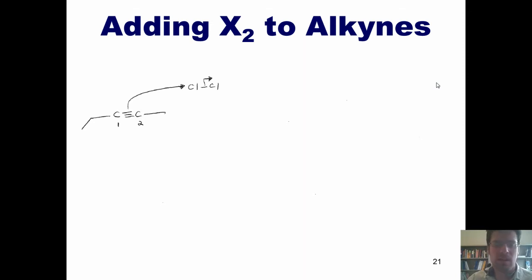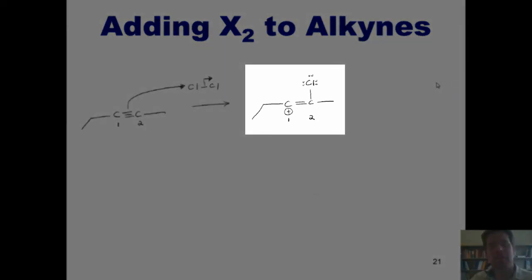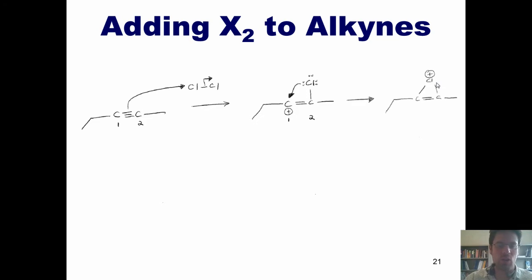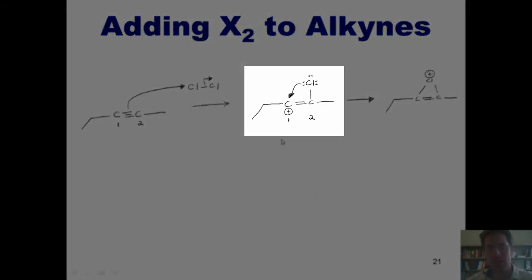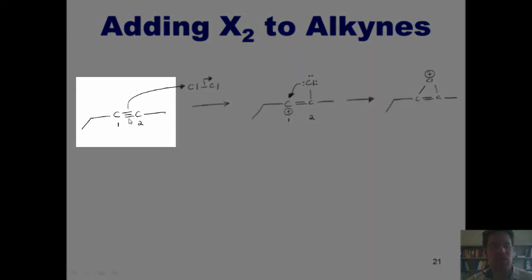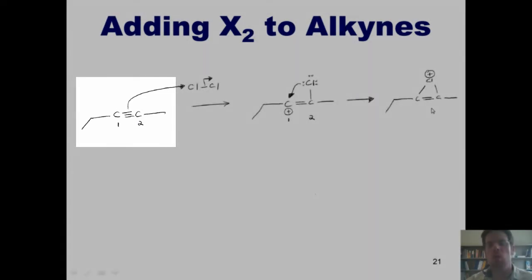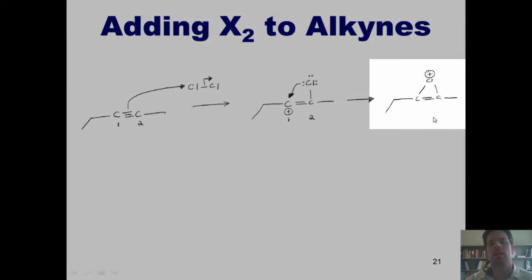Thus, we would form an intermediate that, in theory, might look like this. Now, one thing I want to point out is that this intermediate is not actually a true intermediate, because what happens, in reality, is this chlorine thrusts its electrons down into that carbocation to quench it, and forms a three-membered ring like this with a positively charged chlorine. The same thing also happens when this reaction occurs with Br2, bromine. So, in reality, this molecule is not a true intermediate, but this carbon-carbon triple goes all the way and directly in virtually one instant to this three-membered ring, having the positively charged chlorine at its apex.